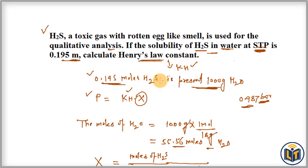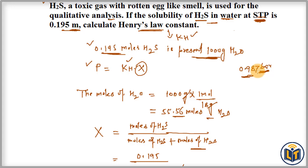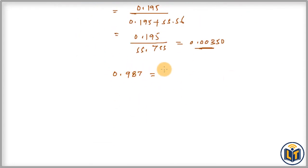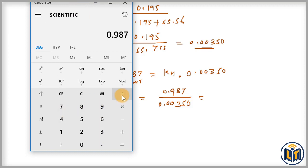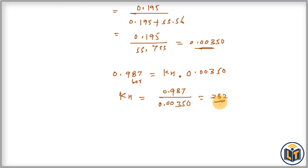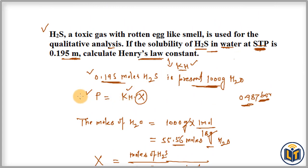Let's plug in the values. P = 0.987 bars equals KH multiplied by mole fraction 0.00350. Transferring 0.00350 to the left side: KH equals 0.987 divided by 0.00350. The unit will be in bars. So KH equals 0.987 divided by 0.00350, which gives us 282 bars. This is the Henry's law constant. That is how we calculate KH by applying Henry's law.